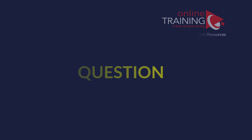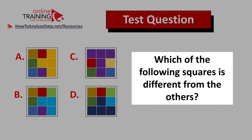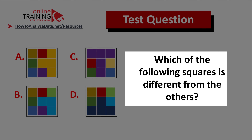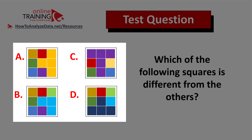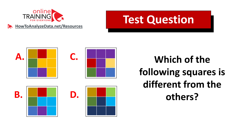Let's look at a question that tests your pattern recognition and analytical skills. Which of the following squares is different from the others? You're presented with four squares, each containing nine small squares of different colors — choices a, b, c, and d — all looking similar, but one is substantially different. Pause and try to find the answer.